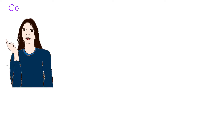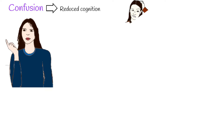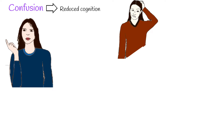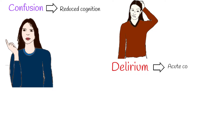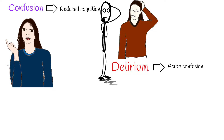Confusion is a mental and behavioral state of reduced cognition and understanding, comprehension, and capacity to reason. Acute confusional state is called delirium. Confusion means loss of orientation, or the ability to place oneself correctly in the world by time, location, and personal identity.